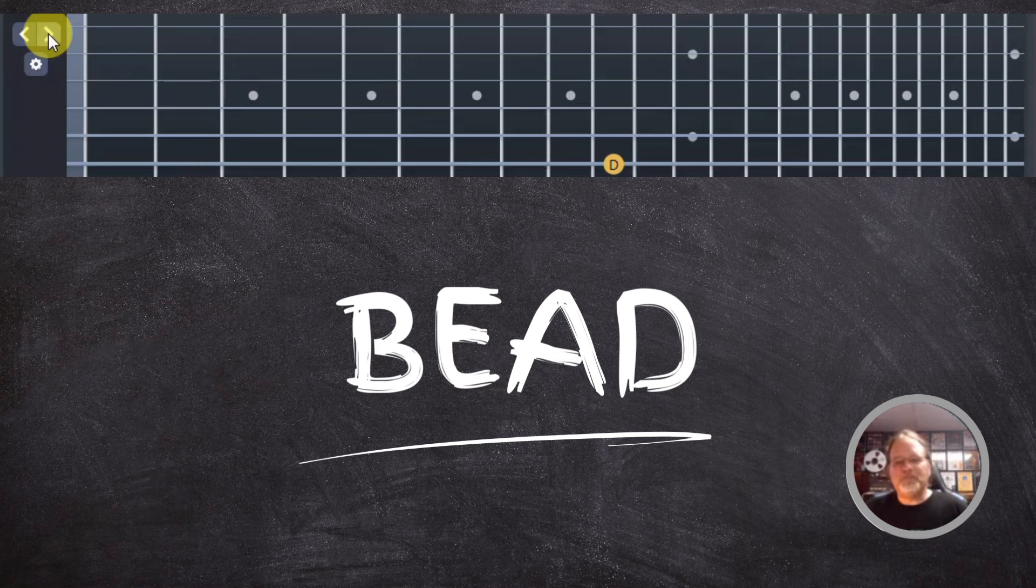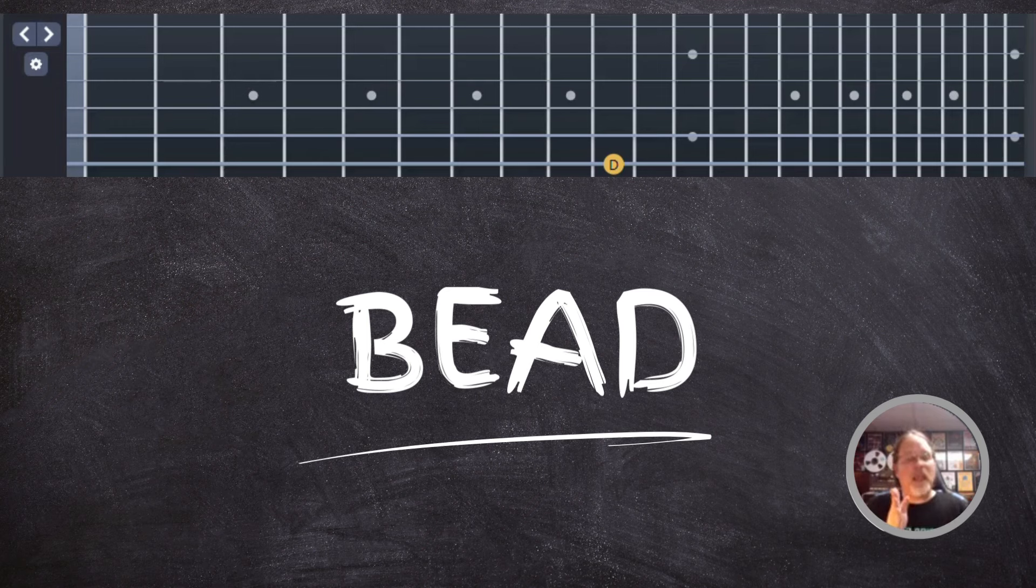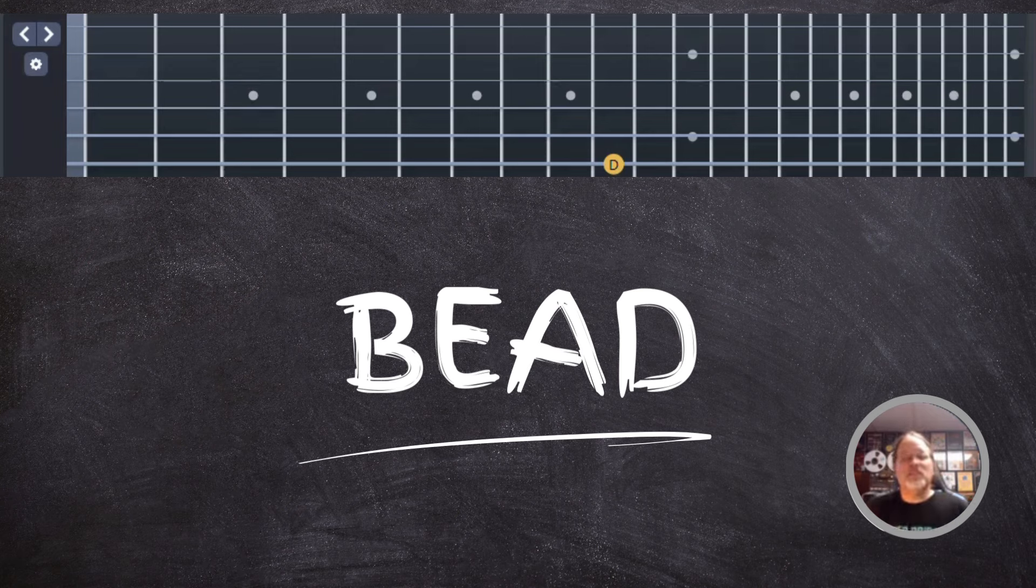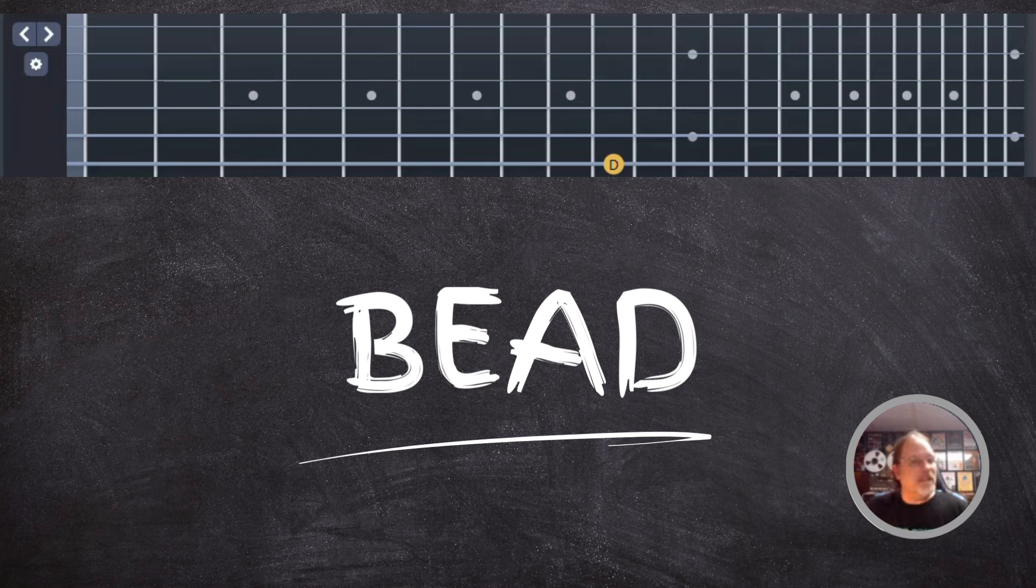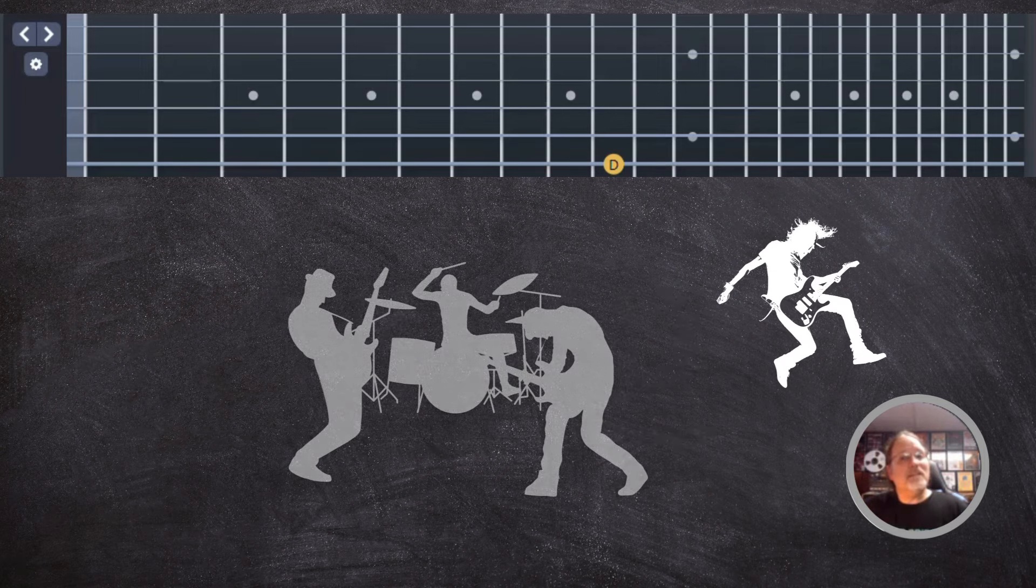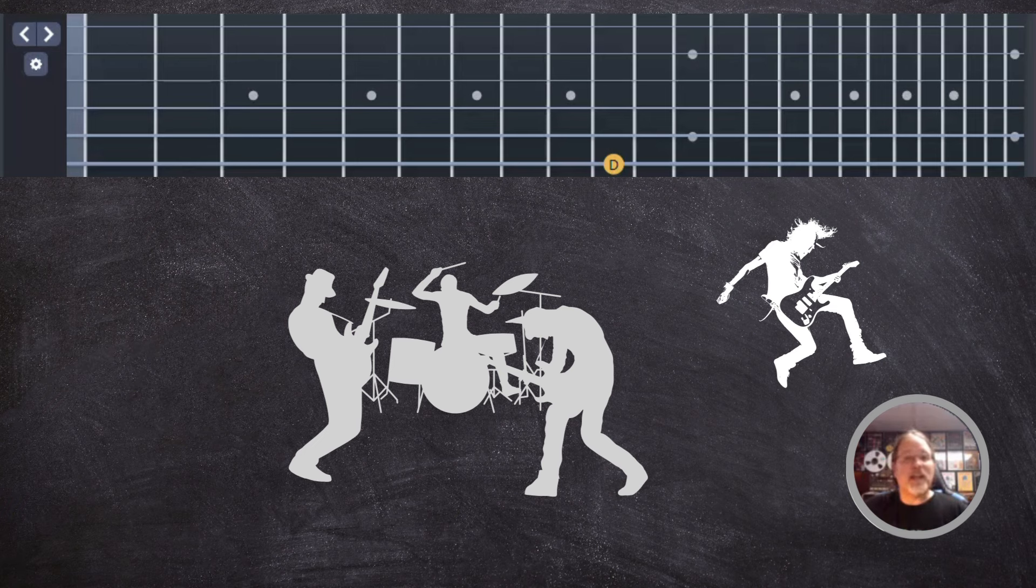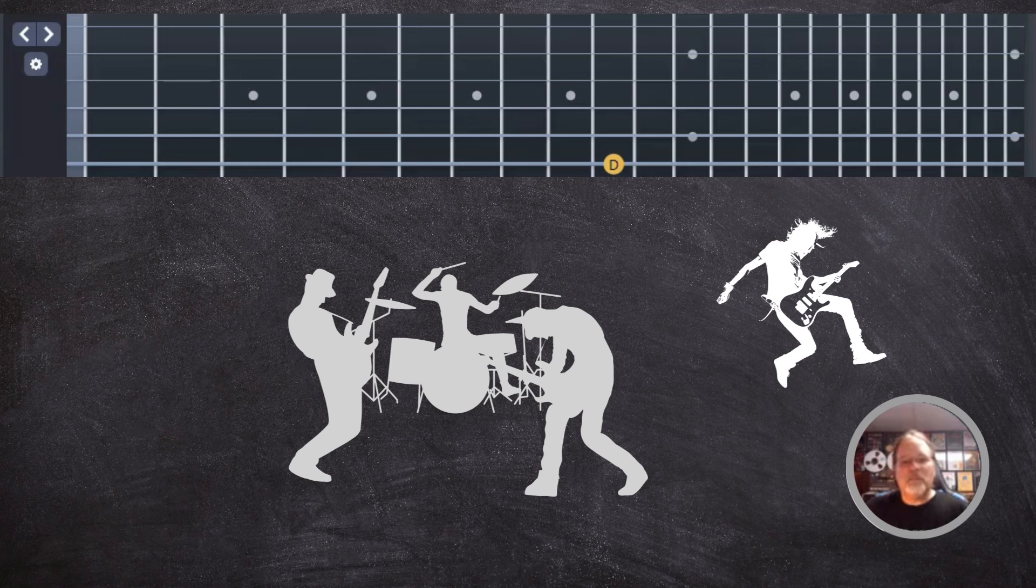So yeah, the goal by the end is to be able to play along with it: B E A D, B E A D, just like that. What you want to do is get that pretty good. You can put on a metronome or something and see if you can hit it on each click, but an even more fun way to do it is to just play along with the backing track.